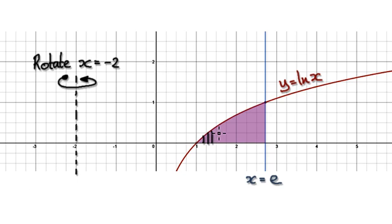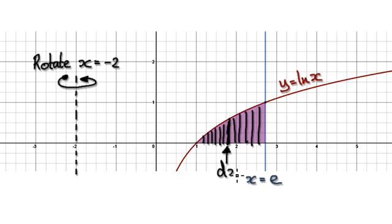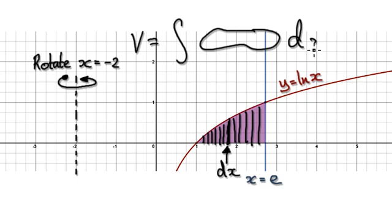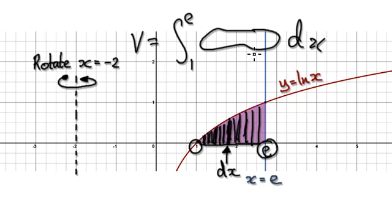To do this, we're going to sum up all the shells. Let's choose this random shell here. The thickness associated with this shell is dx. So the volume will equal something times dx, because you're summing up all the shells from 1 all the way to E. So your integral will look something like this.